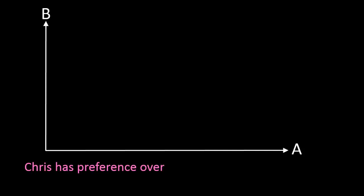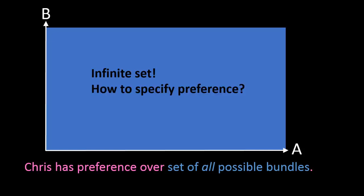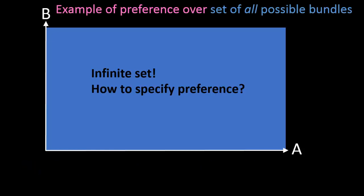We'd like to add one more ingredient to the story of Chris the consumer: to endow Chris with a preference over the set of all possible consumption bundles. That is to say, this entire blue shaded area shown here, going to infinity apples and infinity bananas. Previously, when we talked about preference, we had always been talking about preference over finite sets. But the problem here is that this particular set is an infinite set. So how are we going to specify Chris's preference over this infinite set?